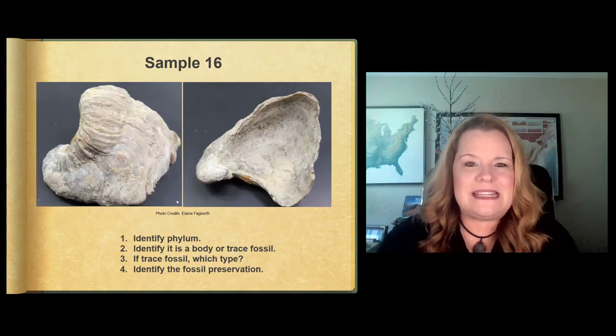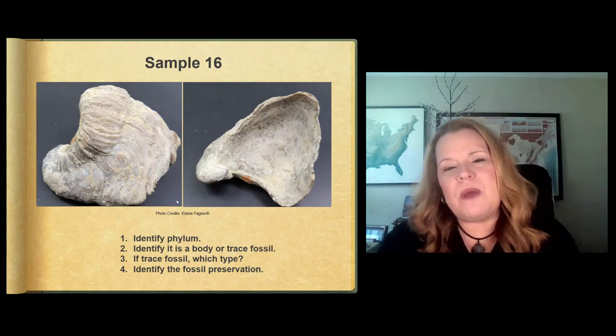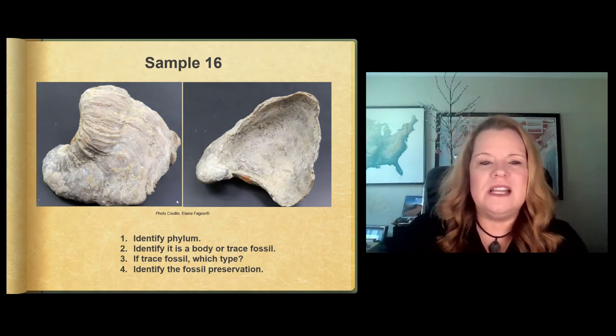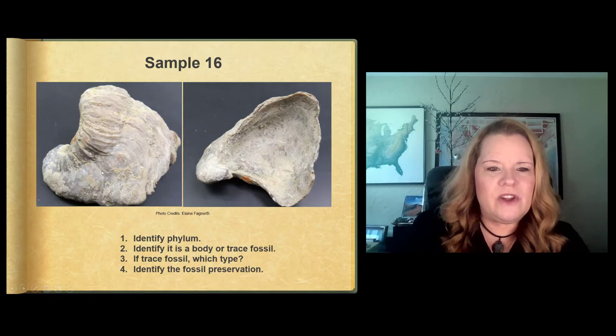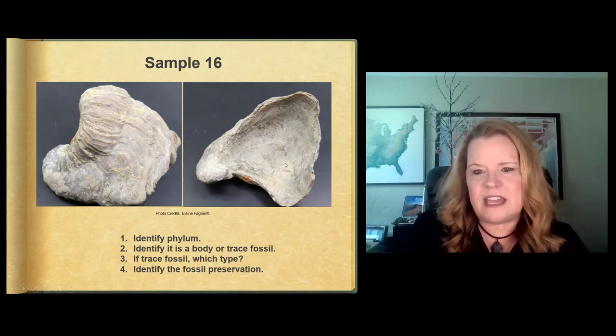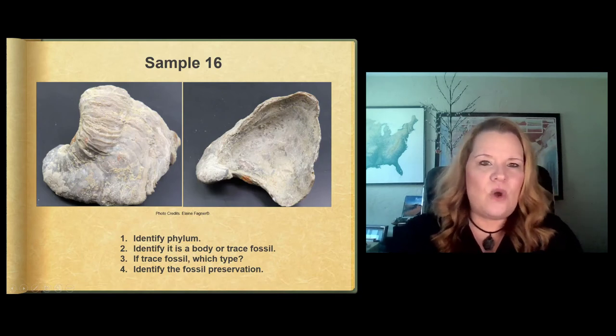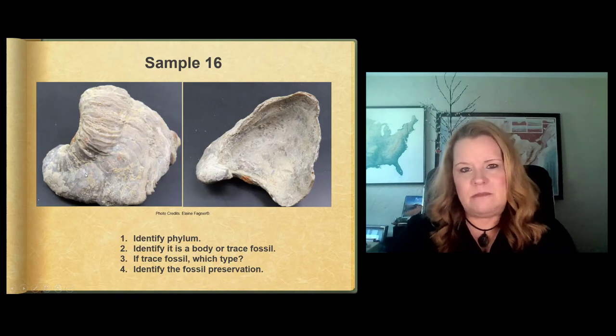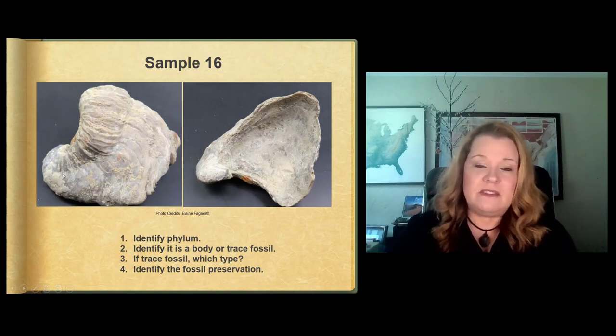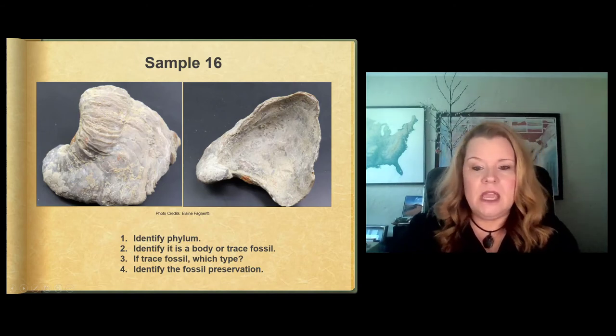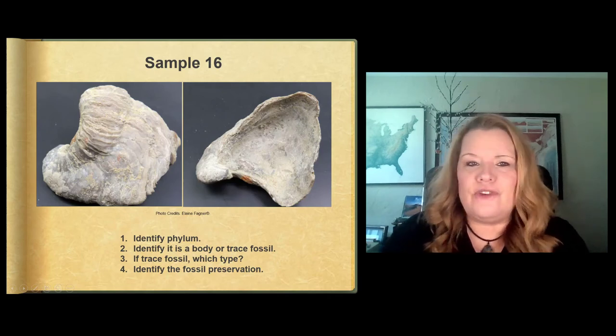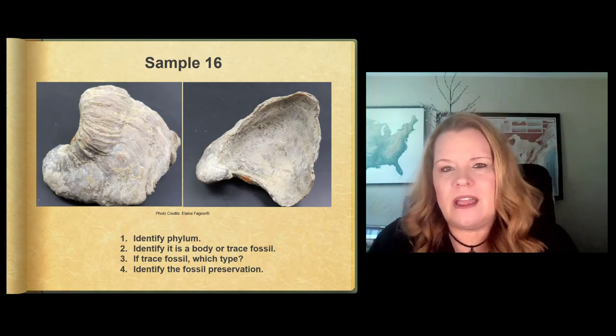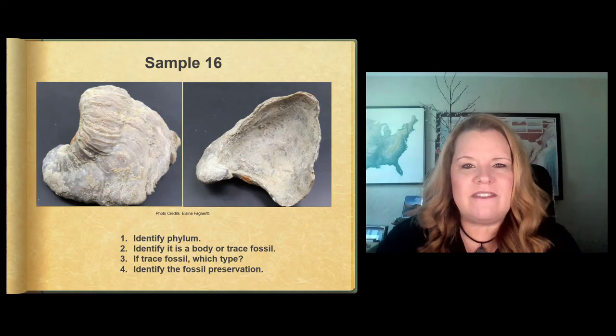Moving on to sample 16. This just shows you two angles of the same fossil. And can you see where the shelly part of this animal has grown one layer at a time? And this is what the inside of it looks like. So which one do all of the clams fall under? That's what this would be. It's like an oyster. Okay. It is recrystallized. It's certainly a body fossil. It can't be anything else.